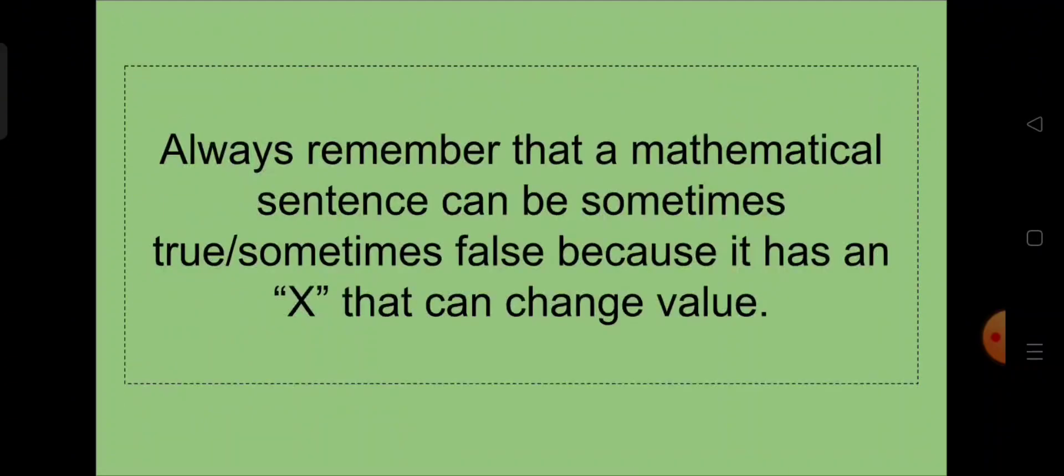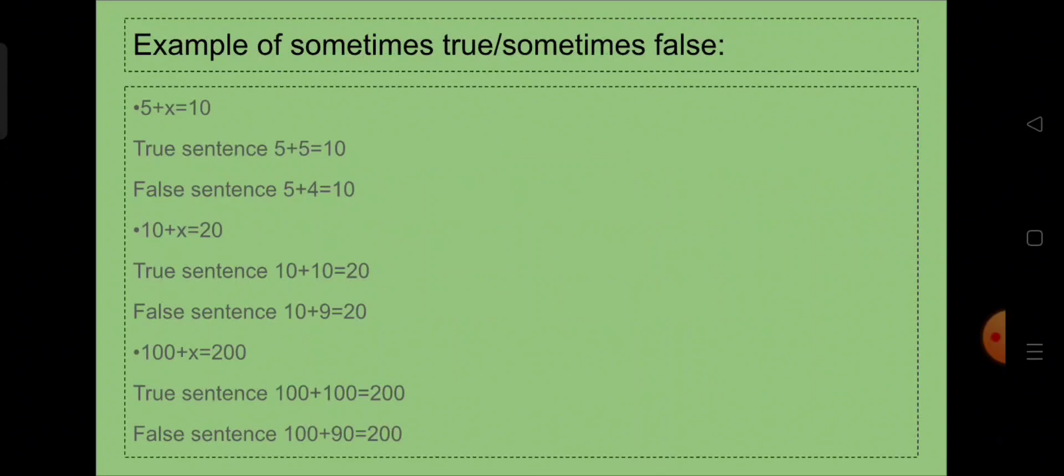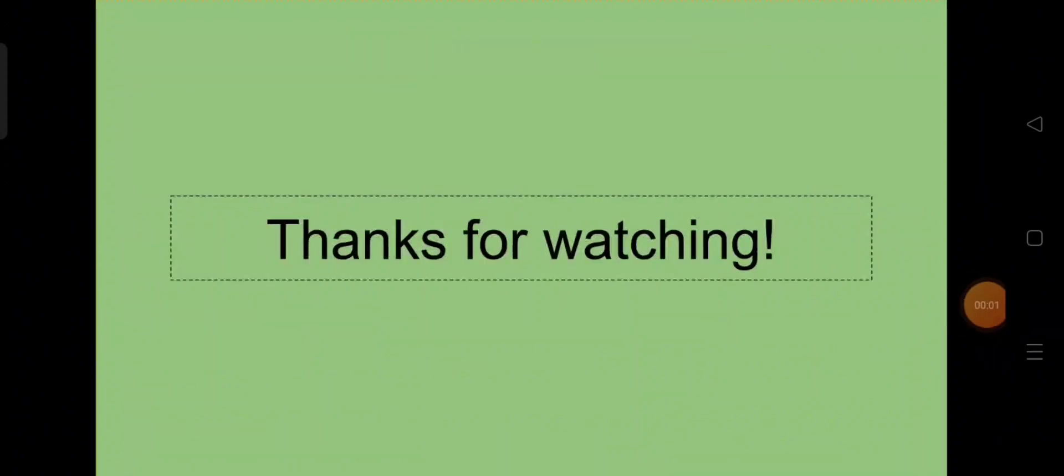Now I want you to remember that a mathematical sentence can be sometimes true or sometimes false because it has the value of x that can change value, like for this example. That's it for discussion and thanks for watching.